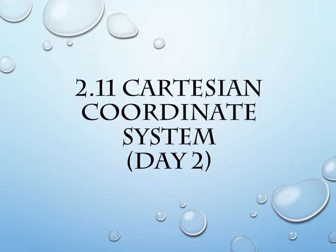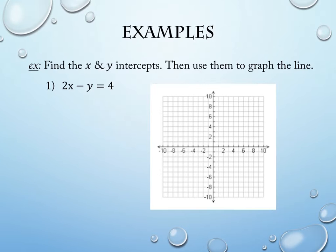In section 210 we started looking at the Cartesian coordinate system, in particular graphs that were lines. We talked about the fact that with a line, you only need two points to plot it. In this section we're going to expand that a little bit. We have the equation 2x minus y equals 4, and we're going to find the x and y-intercept and use those to graph the equation.